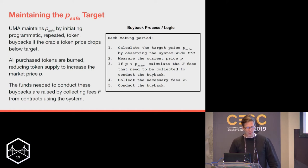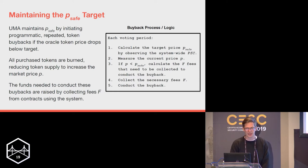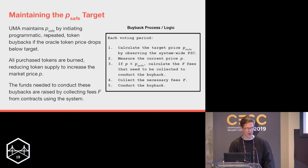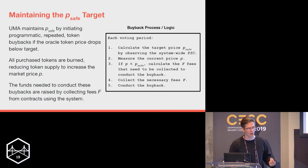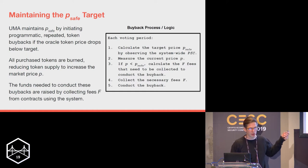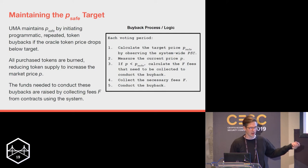We maintain the P-safe target by initiating programmatic repeated token buybacks if and when the token price drops below its target. In our example with a $25M PfC number, if the token price is greater than its floor of $50M we do nothing. As it approaches the floor price we levy a fee on the contracts using the system and use that fee revenue to buy and burn tokens. Because this is done programmatically and immutably written in the logic of the system, we have absolute credibility that it will happen — unlike a central bank that can change its mind.